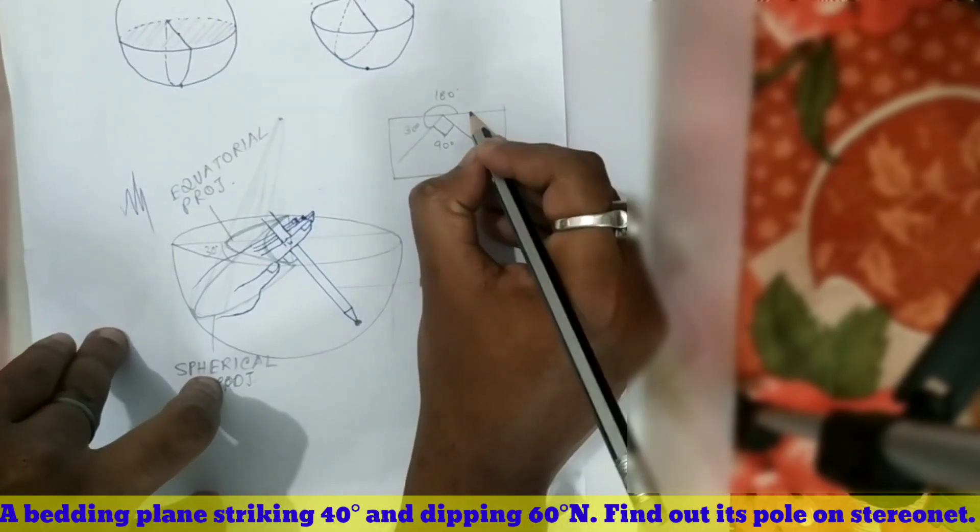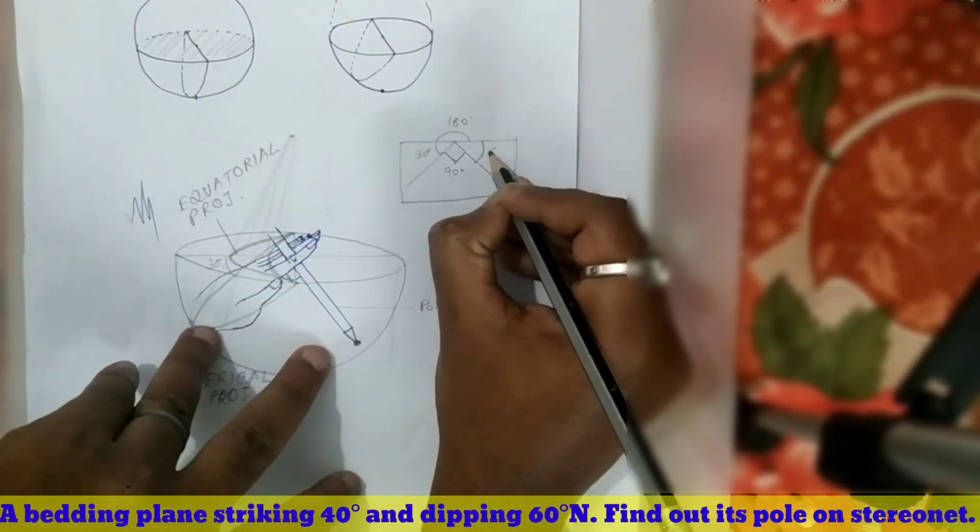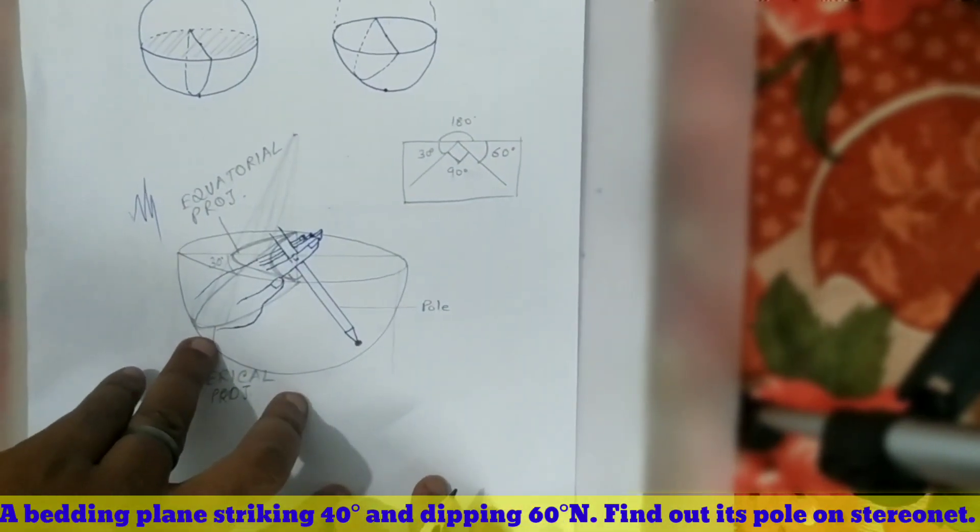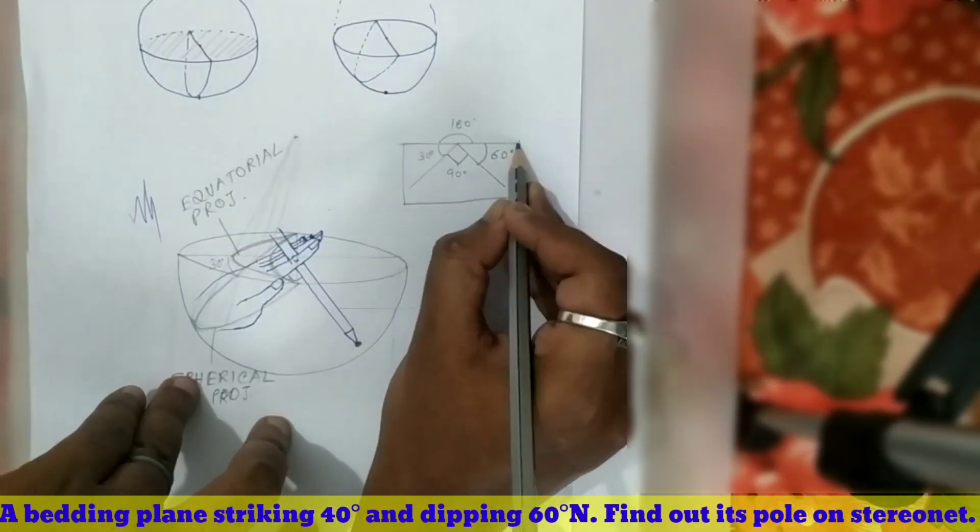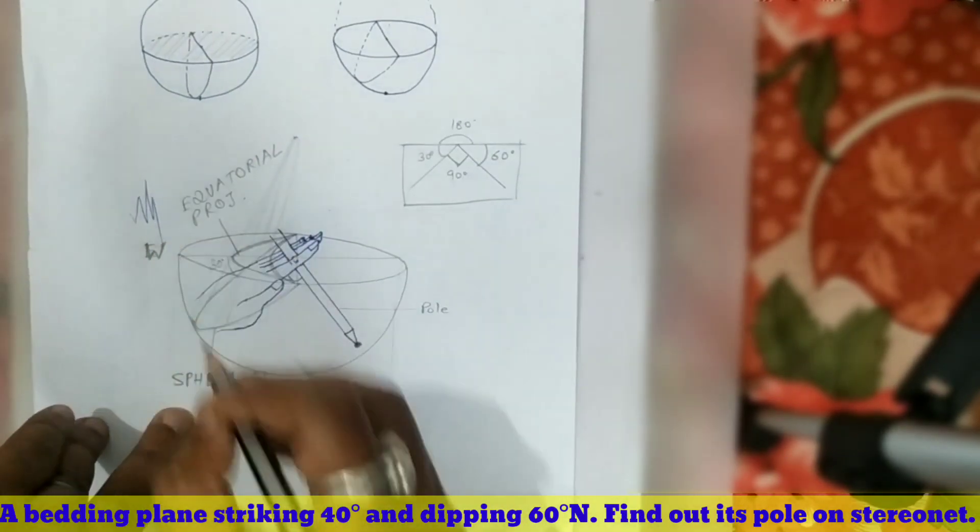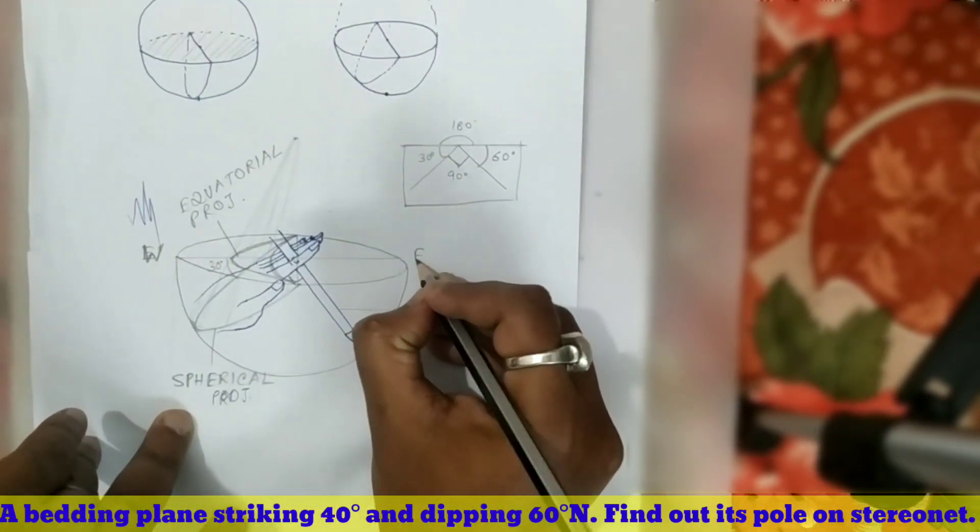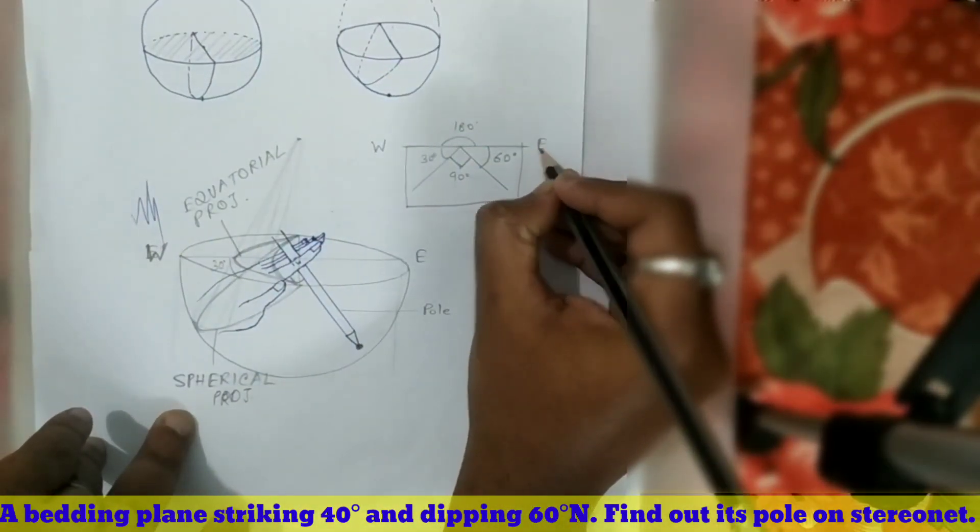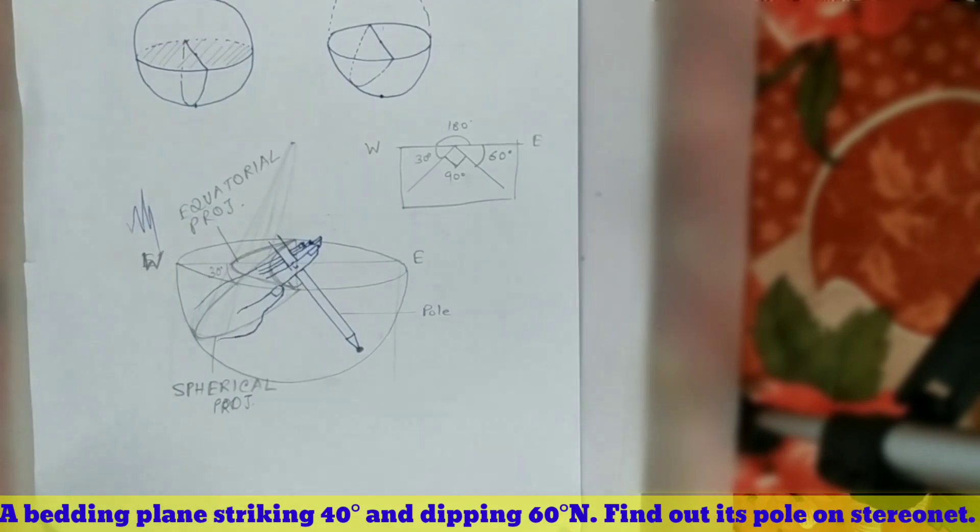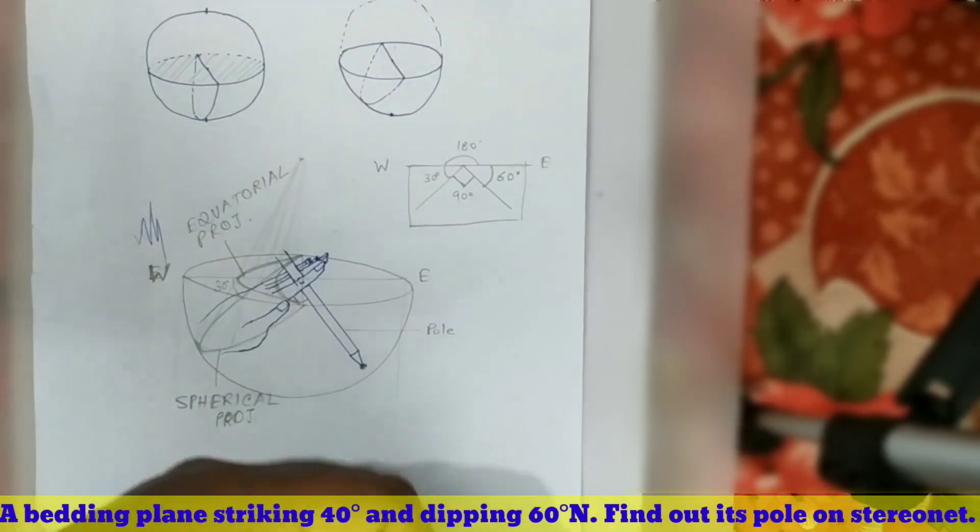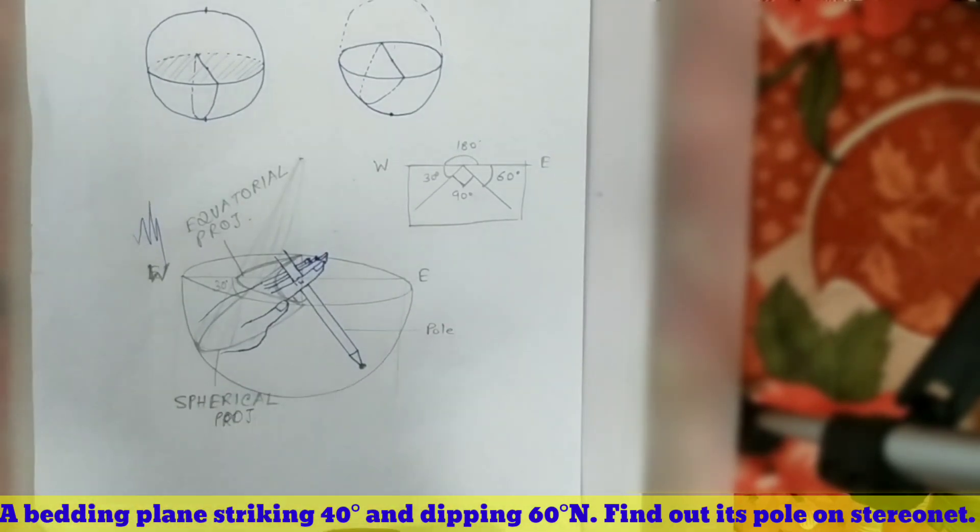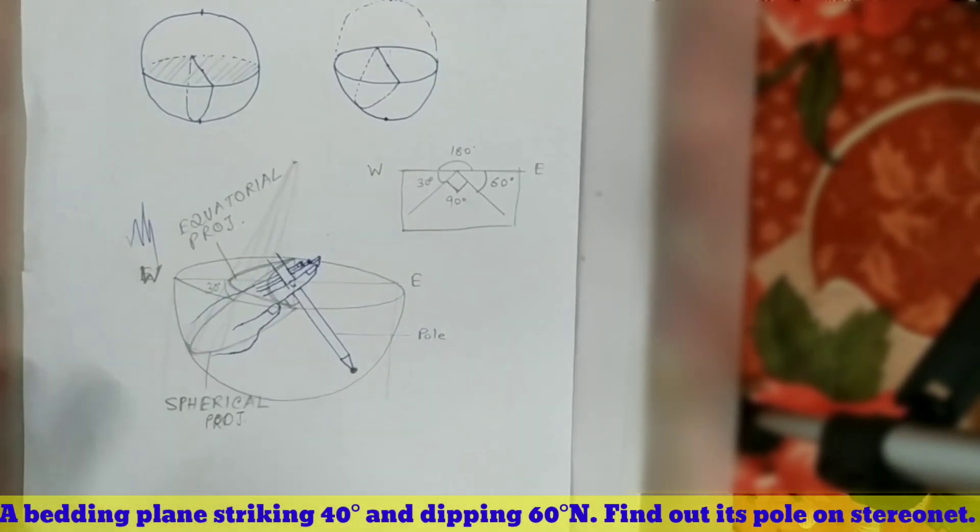So this pole will plunge with 60° towards the opposite direction. Suppose this is west, the pole will plunge towards east. Regarding strike, dip, plunge, we have already had two or three sessions for graphical projection, so you can see that for detailed discussion and proper explanation.